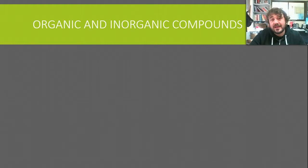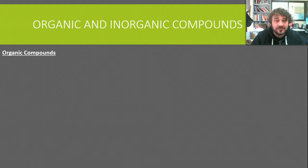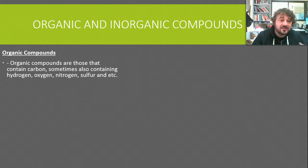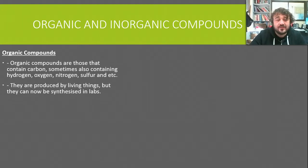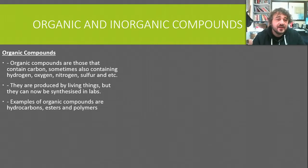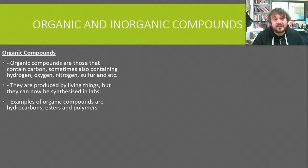So organic and inorganic compounds — let's have a quick look at what they are. This is a bit of revision so we'll go through fairly quickly. Organic compounds are basically those that contain carbon, as well as hydrogen and oxygen, and sometimes nitrogen and sulfur. They tend to be produced by living things, but we can synthesize them in a lab. Examples include hydrocarbons, esters, and polymers.